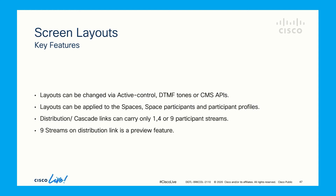Screen layouts can be pre-configured at the space level so that all participants see the same layout. Screen layout can also be configured for the space participant and participant profiles so that whenever the participant joins the meeting they see the pre-configured layout. The layouts can be changed while in the meeting using active control or DTMF profiles. In a distribution meeting scenario, maximum four streams are sent over the distribution links. Nine streams can also be supported, but this is a feature preview.